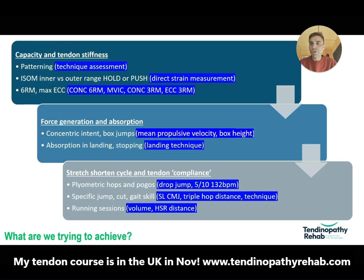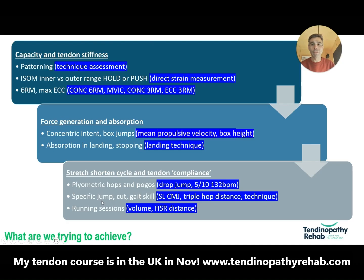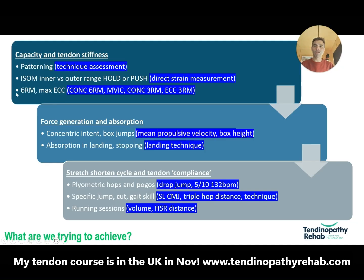The first point is to think about what we're actually trying to achieve. We want to build capacity in the system and tendon stiffness. It's all integrated, but when we're building capacity we're doing things like teaching people the right movement patterns, doing isometric loading to develop stiff tendons but also to develop strength in various specific ranges, and building strength capacity — that could be isotonic work. I've written 6RM there, which is one of the rep ranges we use a lot throughout the course, but it can obviously be modified for different people.